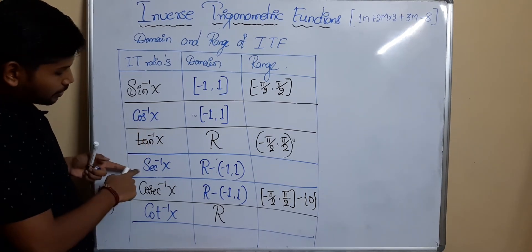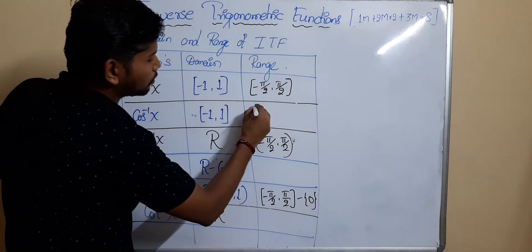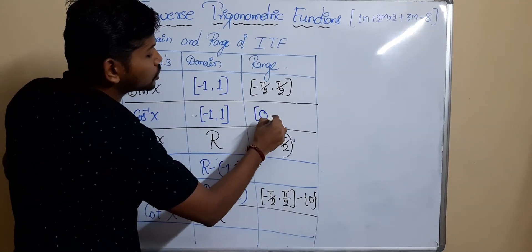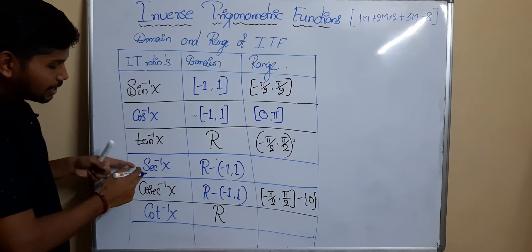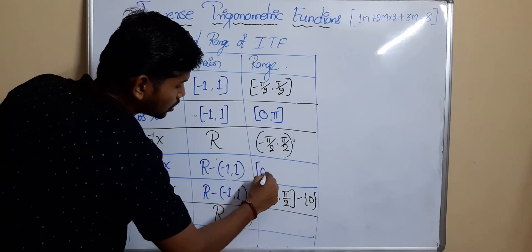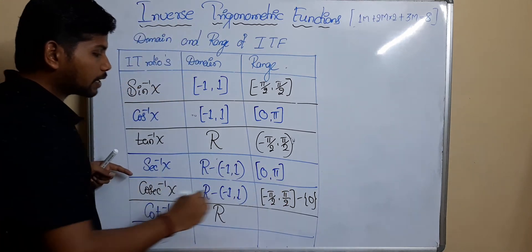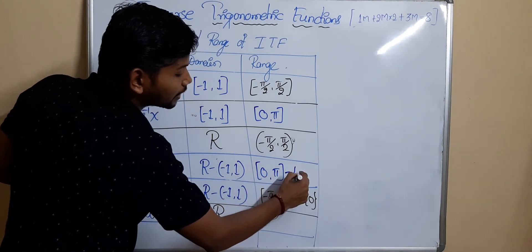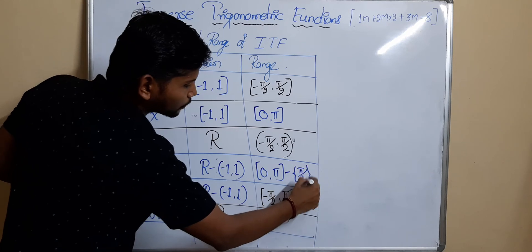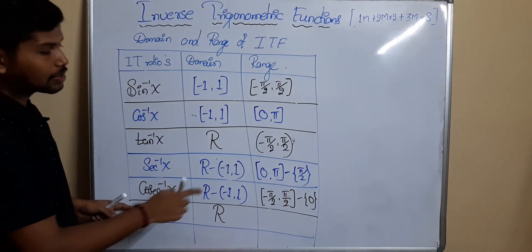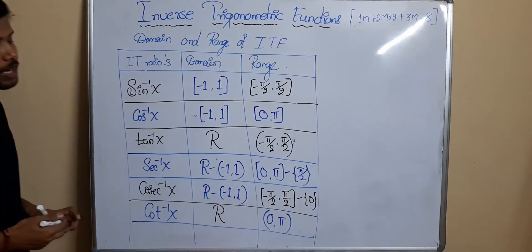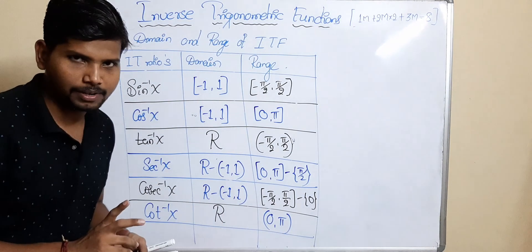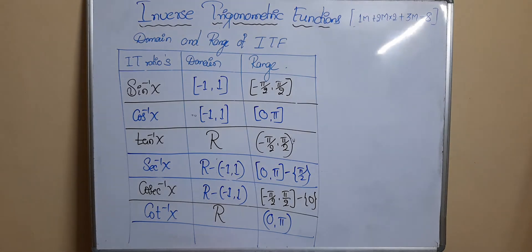Next, the range of cos⁻¹(x) is [0, π]. The reciprocal of cos(x) is sec(x), so the range of sec⁻¹(x) is also [0, π] excluding π/2. The range of cot⁻¹(x) is also [0, π], but the endpoints are excluded, making it an open interval (0, π). Make sure to note this down.